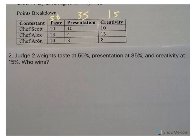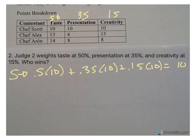All right, well, they say, okay, let's check it out. So let's start with Chef Scott. 50% times 10 plus 35% times 10 plus 15% times 10. Chef Scott still has a score of 10, right? Because they're all 10s, so that works.